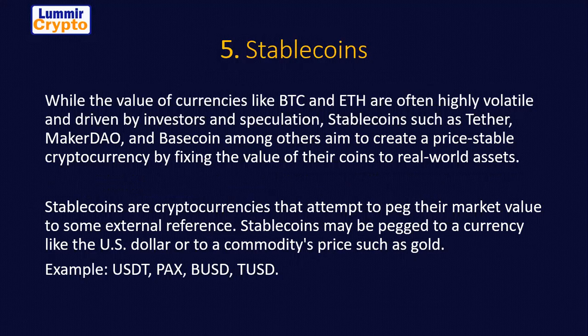Stable coins — if you have been in this space, you know the stories: Bitcoin is increasing, Bitcoin is falling, Ethereum is increasing, Ethereum is falling. But we have coins that are stable. They don't move an inch. While the value of currencies like BTC and ETH are often highly volatile and driven by investors and speculation, stable coins such as Tether, MakerDAO, and Basecoin aim to create a price-stable cryptocurrency by fixing the value of their coin to a reward asset.